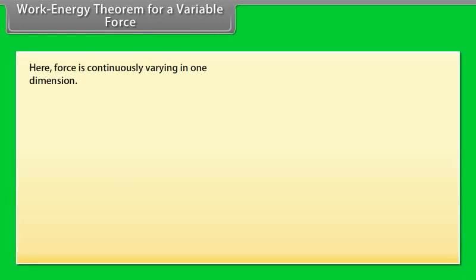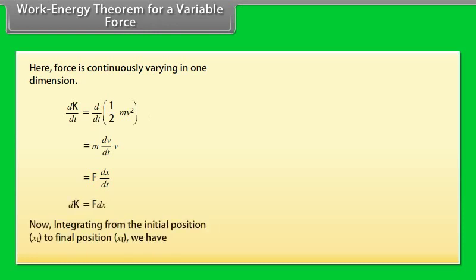Work energy theorem for a variable force: Here force is continuously varying in one dimension. By calculating Dk by dt equal to d by dt into half mv square, we get Dk upon dt is equal to f into dx by dt, which gives Dk is equal to f dx. Now integrating from the initial position xi to final position xf, we have...